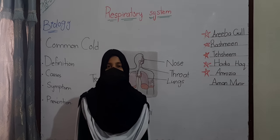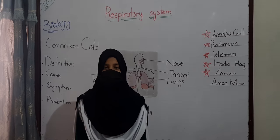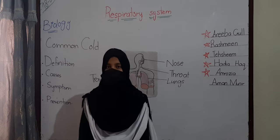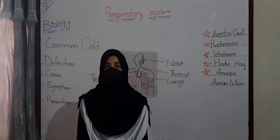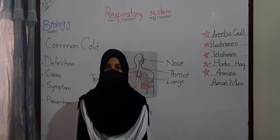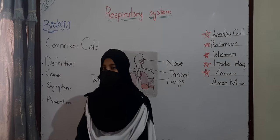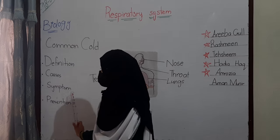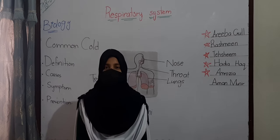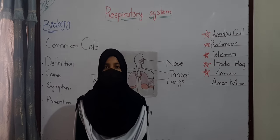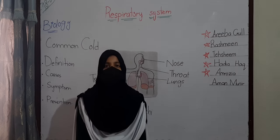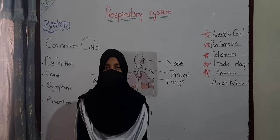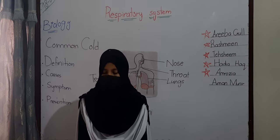Disorders of the respiratory system. Common cold. Definition: It is a disease in which bacteria attack and mucus helps defend against them. Causes: It is caused by bacteria. Symptoms: Watery eyes, coughing, and headache. Prevention: Use tissue paper during sneezing, avoid cold things, and drink plenty of water.